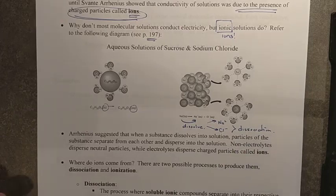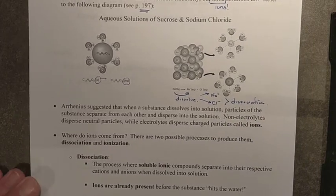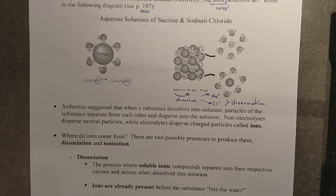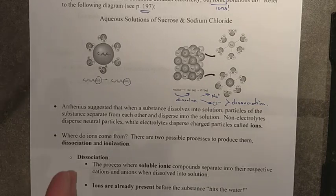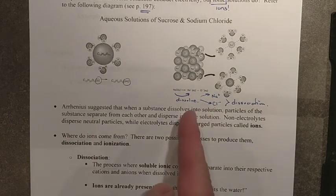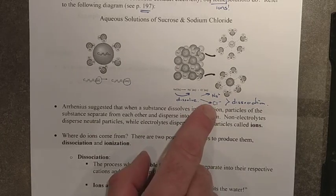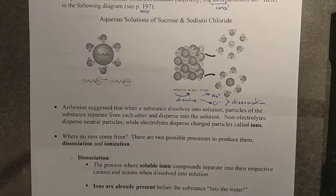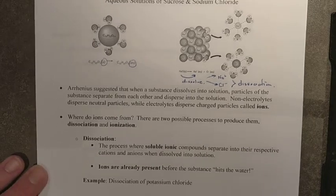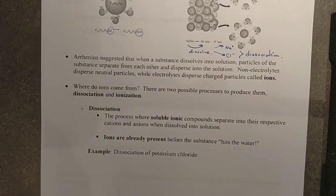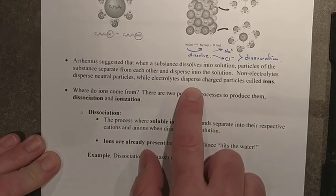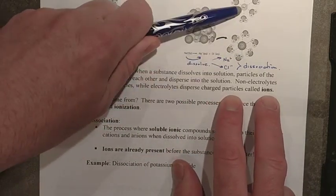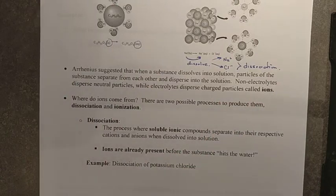So what this means for us, and what your takeaway is on this one, is that molecular compounds and soluble ionic compounds kind of dissolve differently. While water is able to dissolve a great variety of both molecules and ionic compounds, it can, when it does dissolve ionic compounds, pull it apart and isolate the individual ions, leaving positive and negative ions in the solution. Therefore, we now have something that can be an electrolyte. So Arrhenius suggested that when these particles were being dissolved, non-electrolytes dispersed neutral particles like the sugar, and electrolytes dispersed the individual ions, positive and negative parts, allowing for a conductive solution.